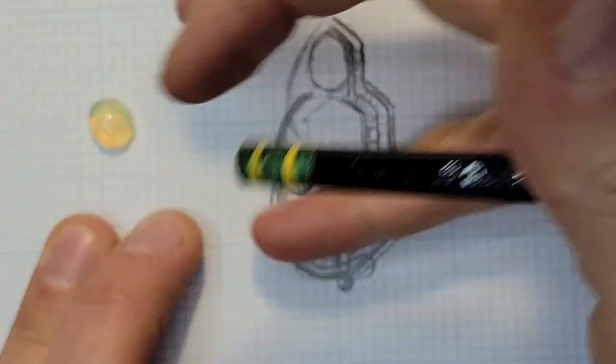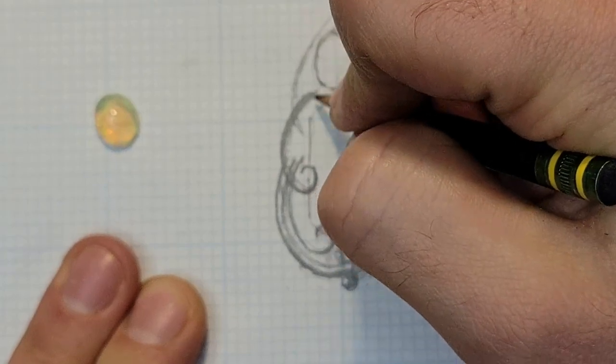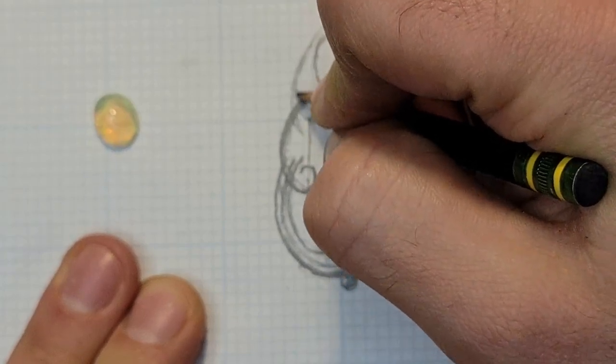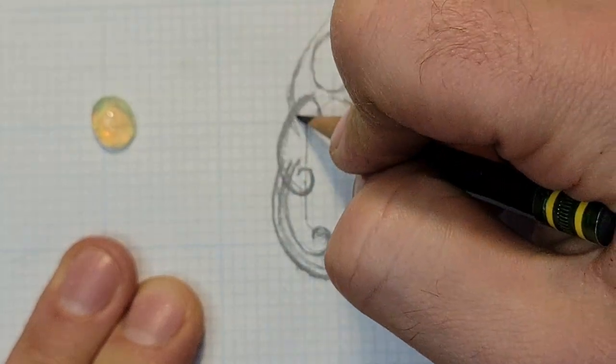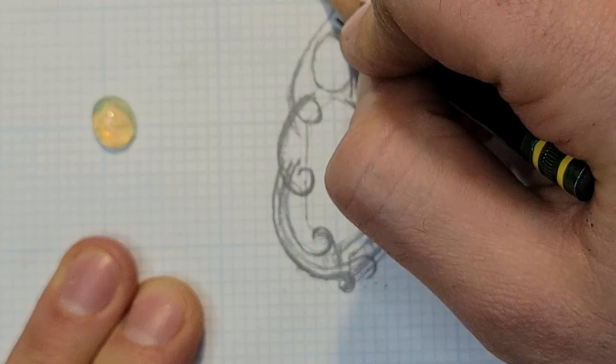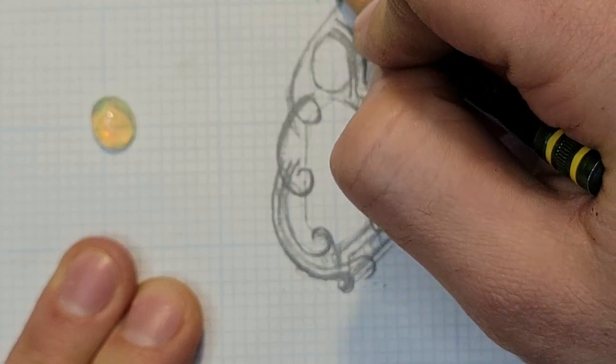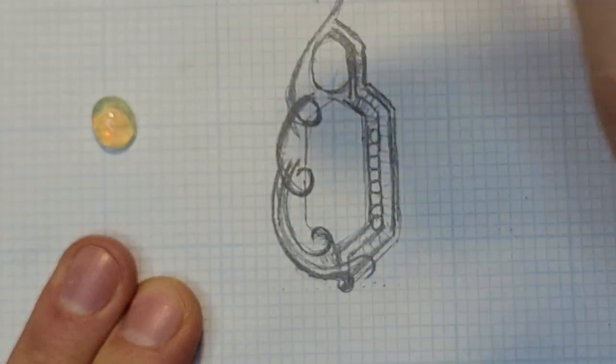I think where I started the swirl is a little too low, so I'm going to move that up and bring it to the top of my cabochon. And that looks a lot better to myself. It looks just more like a natural swirl. So it's going to be kind of like a cascading waterfall of swirls going down the side of the piece.